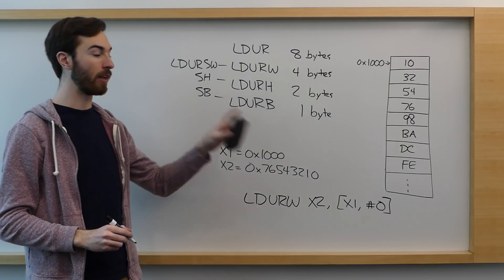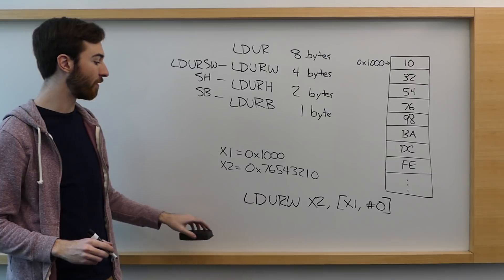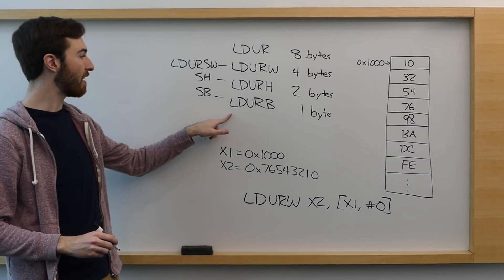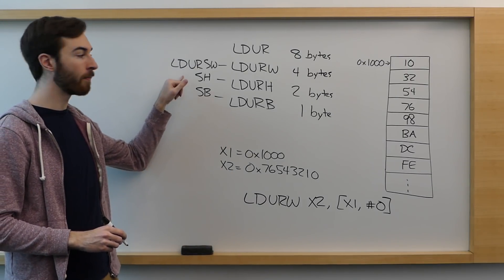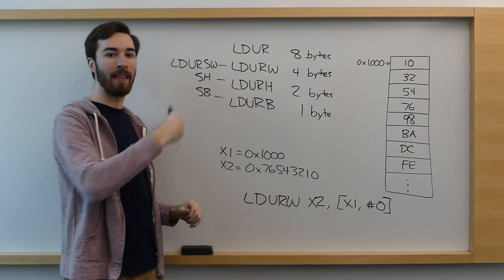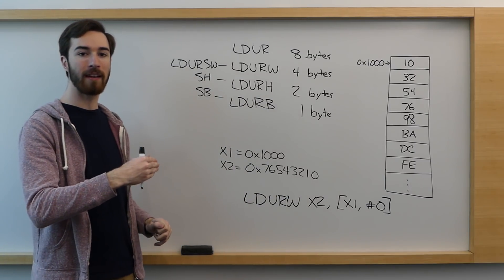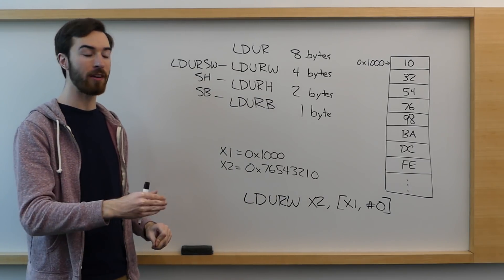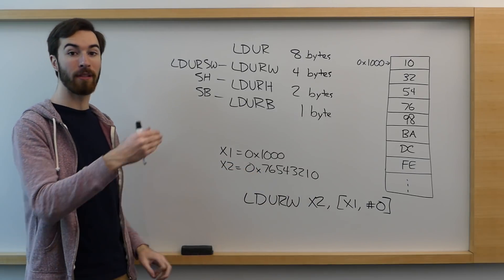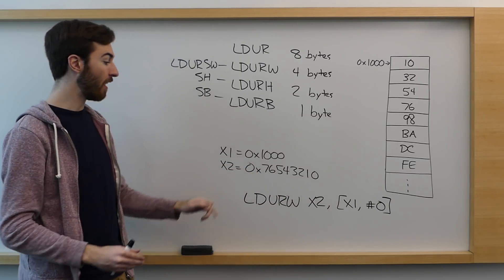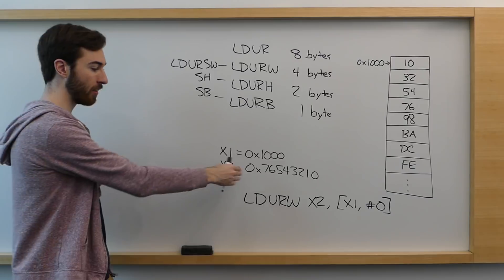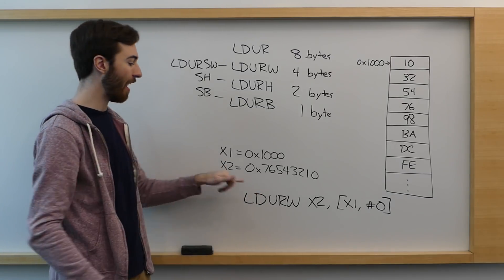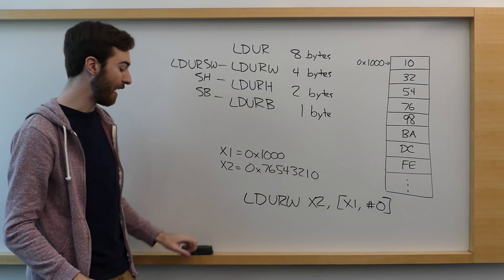And when you use one of these commands, the only difference between what it normally does and the sign extension version is that it will take whatever you're loading in and it will look at the leftmost bit of what you're loading in. If the leftmost bit is a 0, it just loads it in normally. If the leftmost bit is a 1, it will instead fill the entire register on the left with 1s and then fill in the number that you wanted at the end.